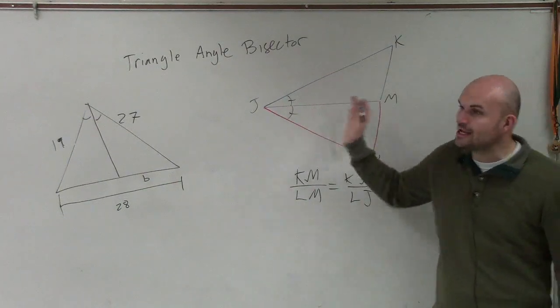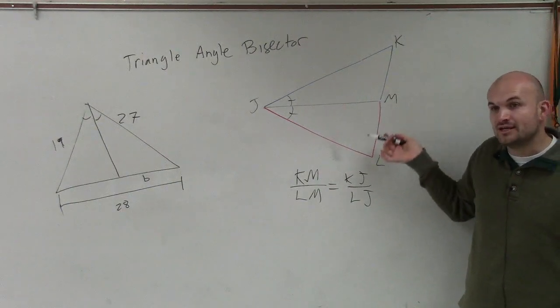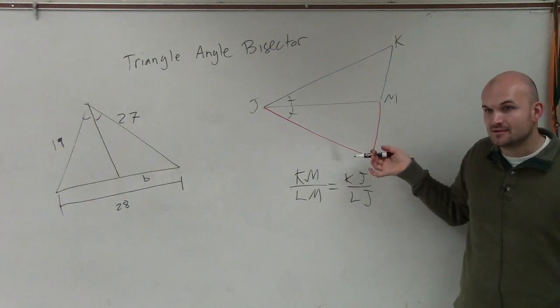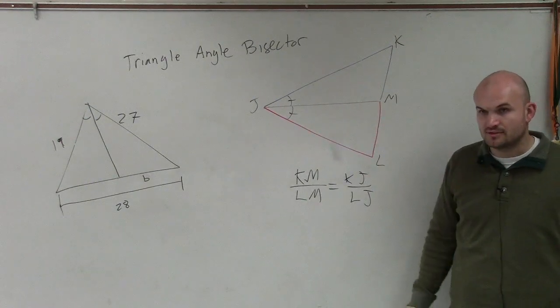If you guys look at a triangle and you have an angle bisector, all I want you guys to understand is that the proportion of their sides, the ratio of their sides, are proportional to each other.